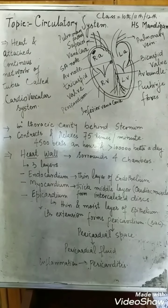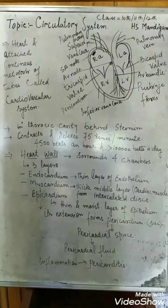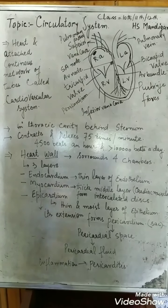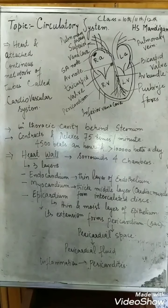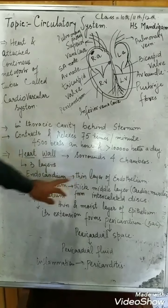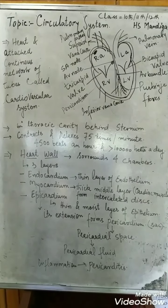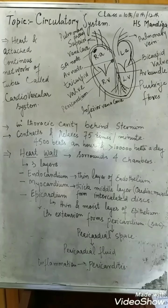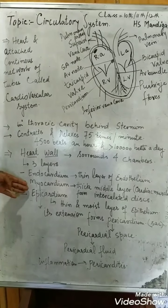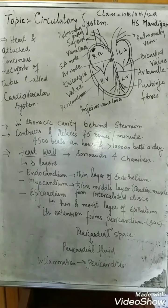The heart pumps blood by the contraction and relaxation of its chambers. The heart wall that surrounds all four chambers of the heart is three-layered. The three layers are: the endocardium, the myocardium, and the epicardium.